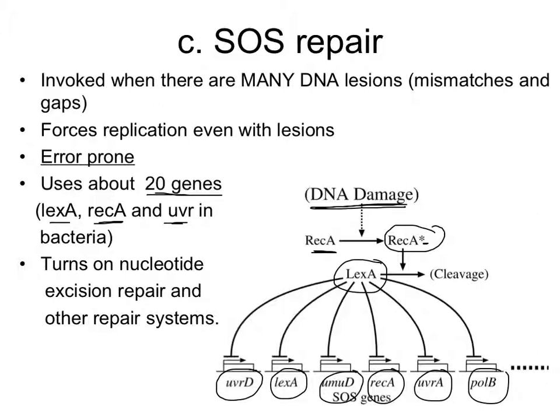SOS repair is well studied in bacteria but also occurs in eukaryotes, and is very useful in the face of acute DNA damage — for example, the kind of damage that would occur after a severe nuclear incident.